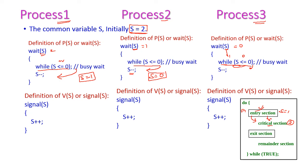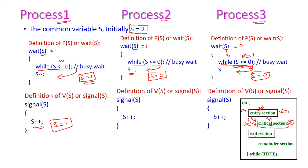After completing execution, process 1 comes to the exit section and increments the S value. Now S value equals 1. Once the S value turns positive, process 3 will decrement the S value and enter into the critical section. Likewise, more processes can share the critical section based on the number of available resources.